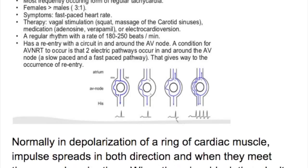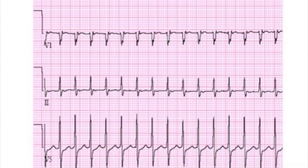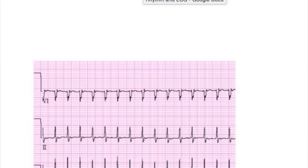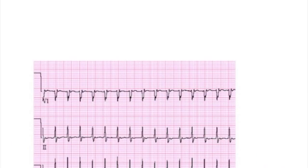The next topic is atrioventricular nodal reentrant tachycardia, AVNRT. This is a nodal arrhythmia — AV nodal arrhythmia — but there is supraventricular tachycardia. AVNRT is the most frequently occurring form of regular tachycardia, affecting females three times more than males, with a fast heart rate of 180 to 250 beats a minute and a regular rhythm.